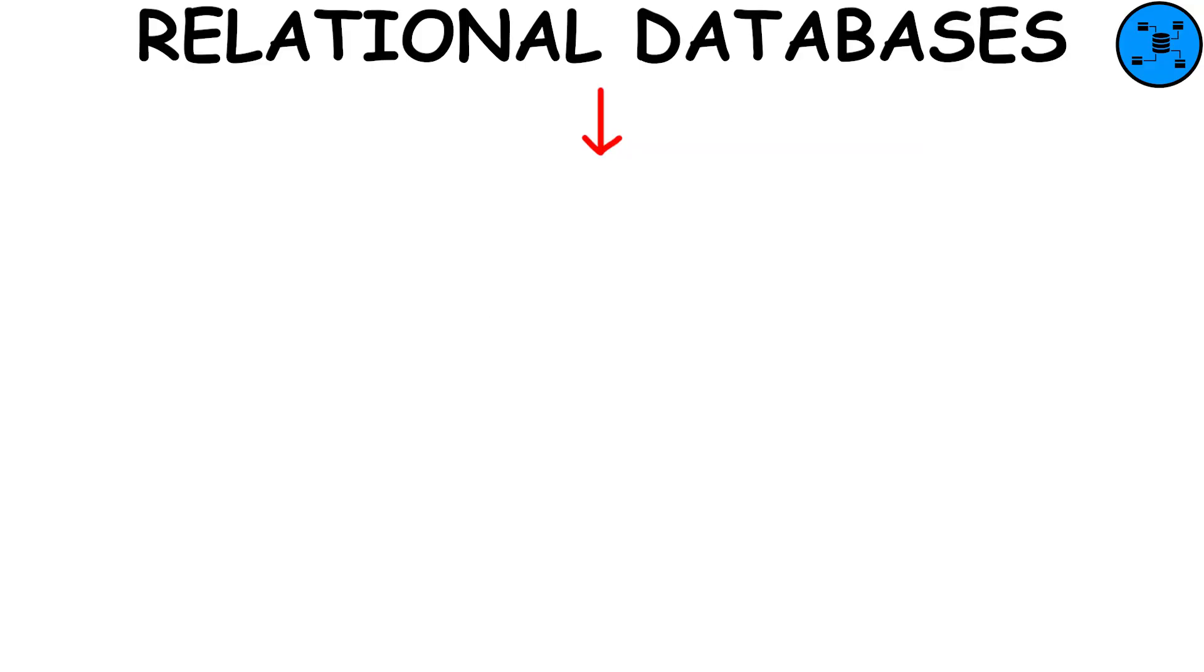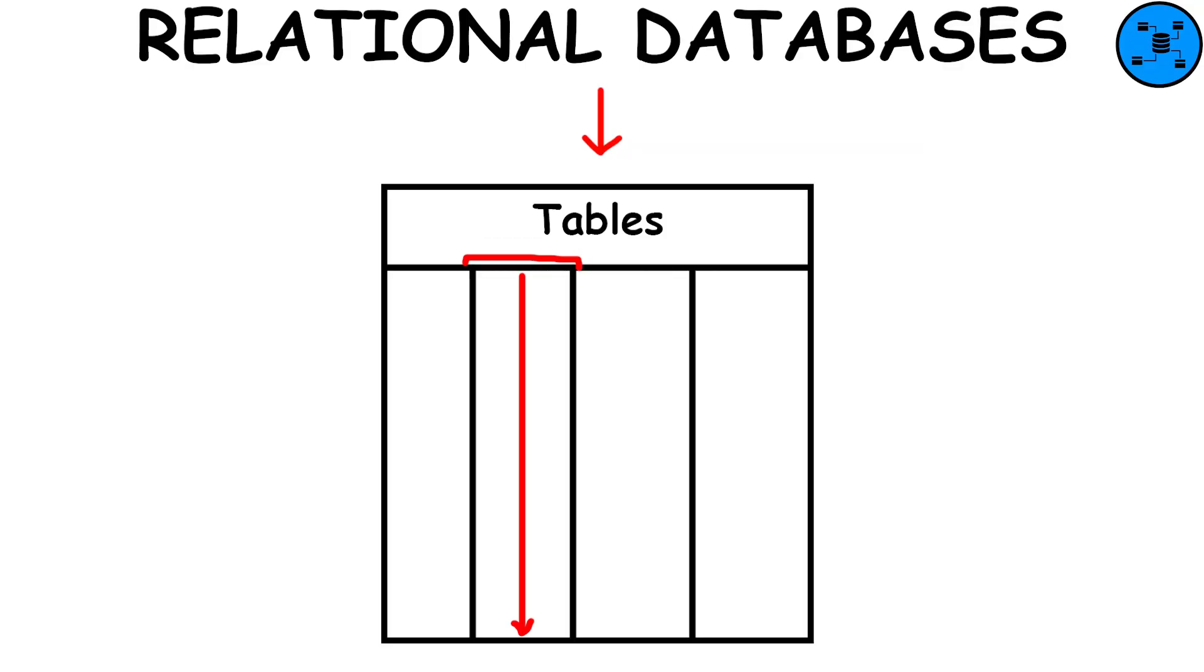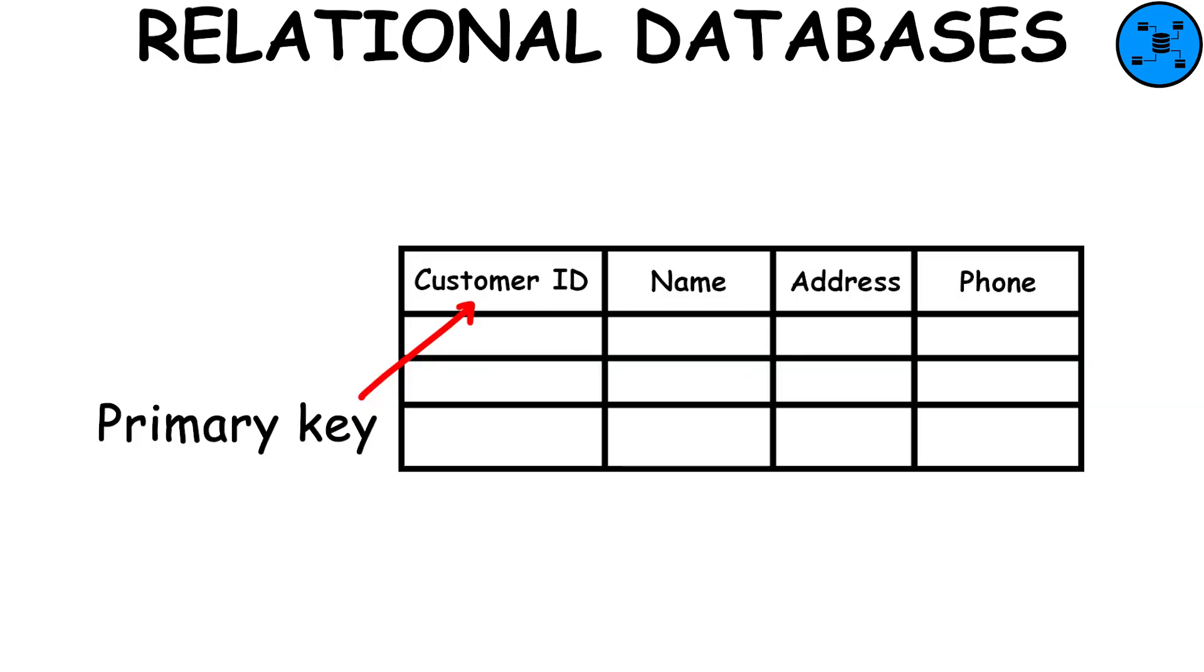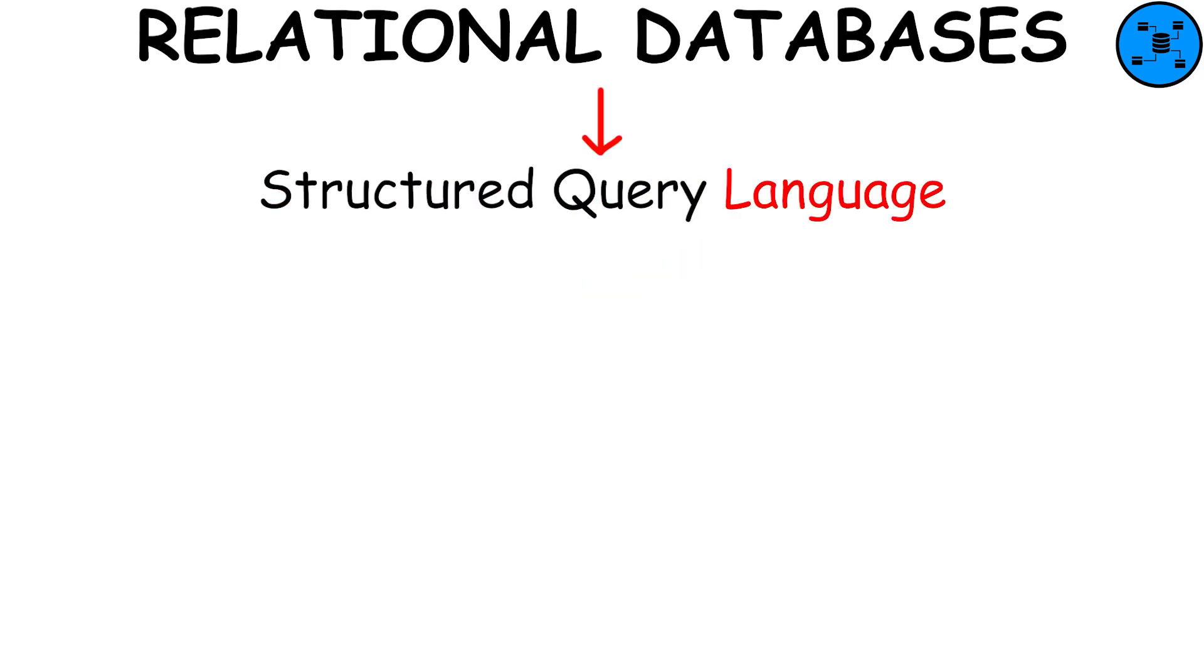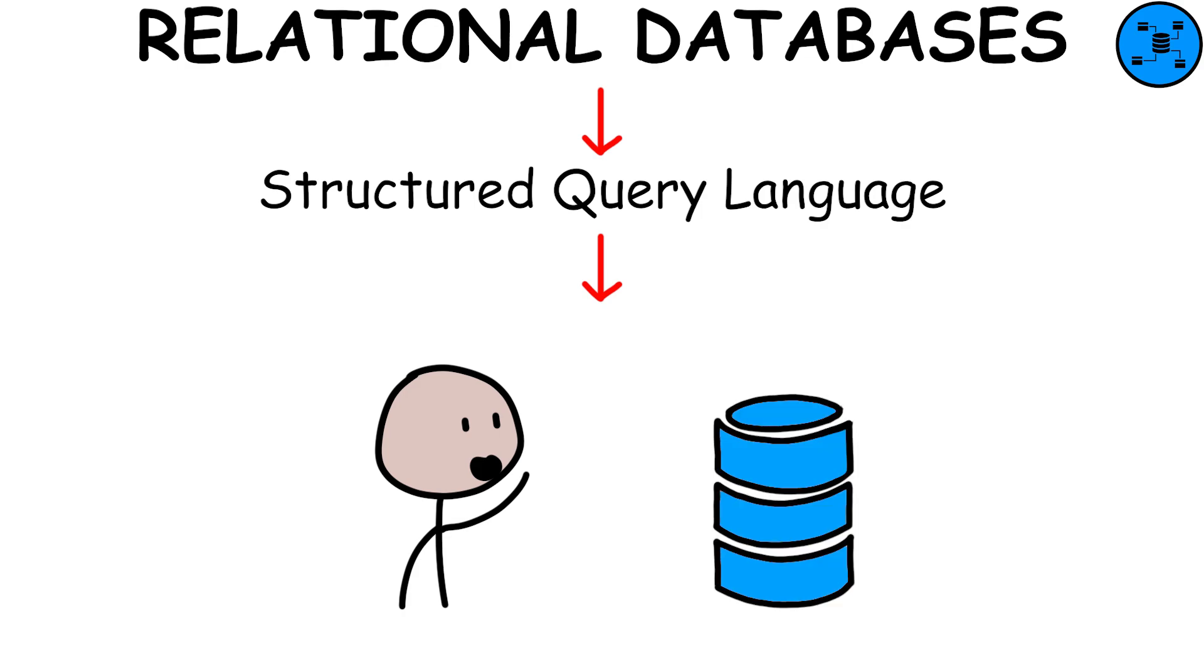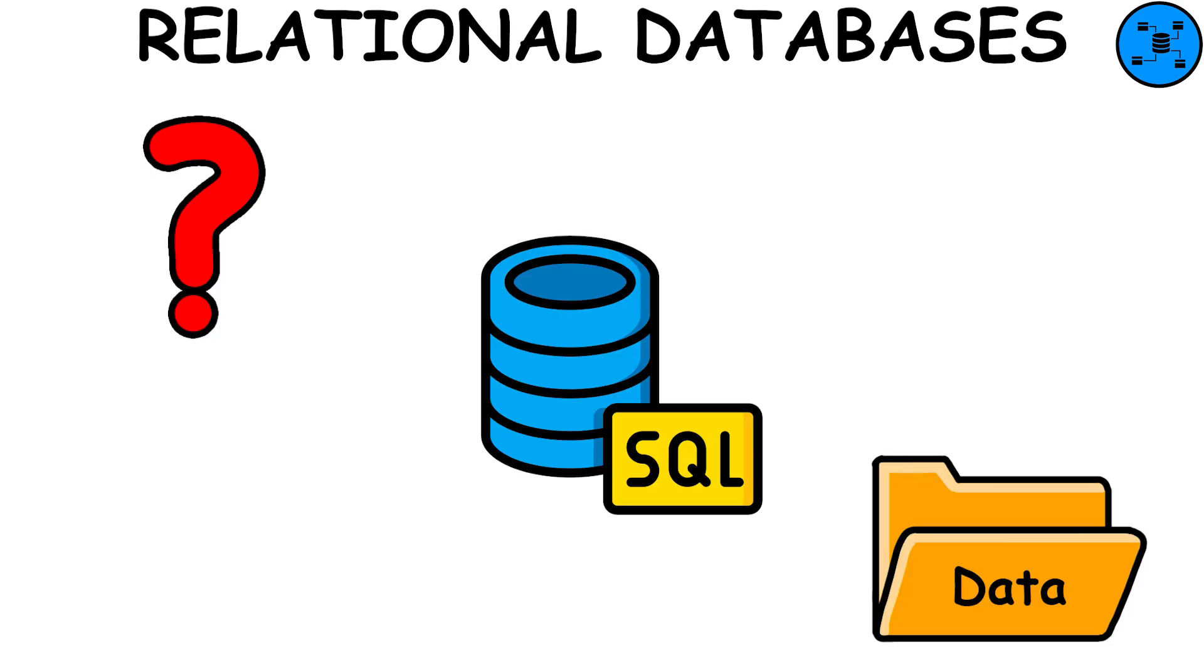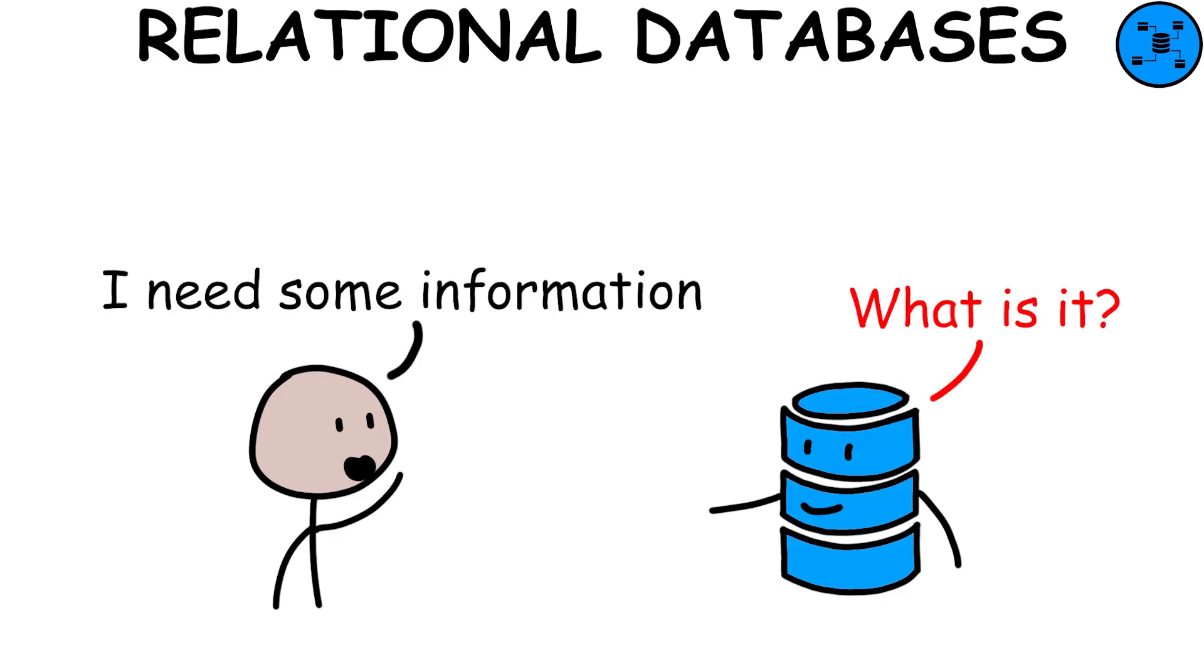Relational databases are like organized spreadsheets where data is stored in tables. Each table has columns and rows. To connect data between tables, we use special keys. A primary key uniquely identifies each row in a table, while a foreign key links rows between tables. Structured query language is like the language we use to talk to these databases. With SQL, we can ask questions to retrieve specific data, make changes, or manage the database structure. It's like having a conversation with the database to get the information we need.